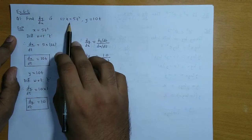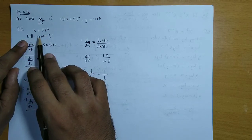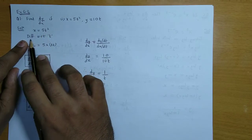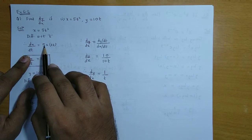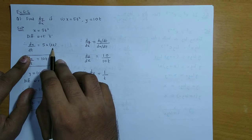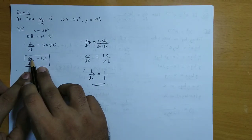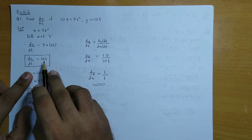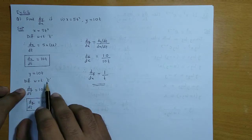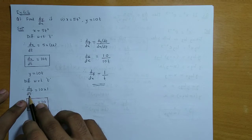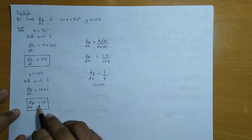To find dy/dx, consider the first equation x = 5t². We differentiate with respect to the parameter t, giving dx/dt = 10t. Now we differentiate y with respect to t. We have dy/dt = 10, since the derivative of 10t with respect to t is 10.